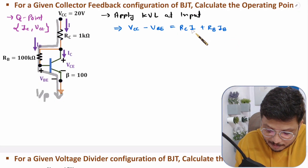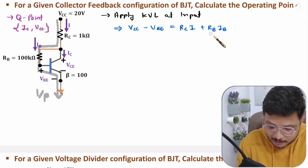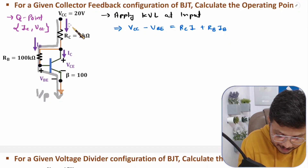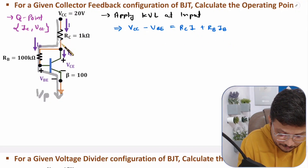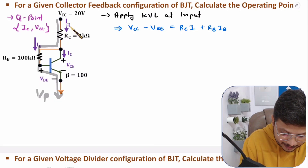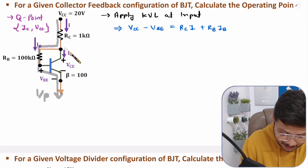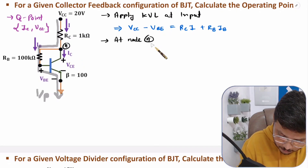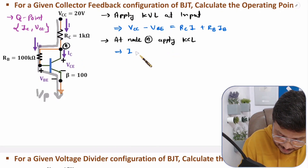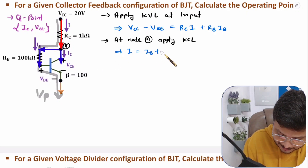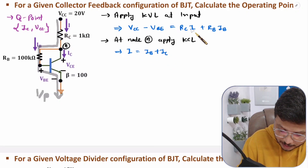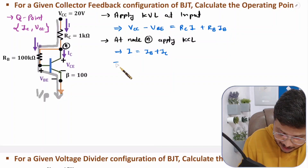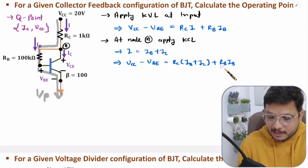We want to find IB from this equation, so I need to convert I in terms of IB. At this node, the entering current is I and the leaving currents are IB and IC. So I equals IB plus IC. Let us substitute that into the equation.